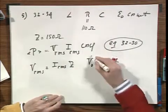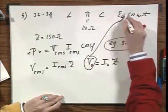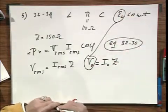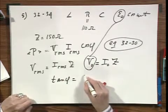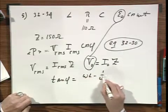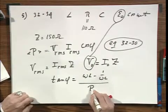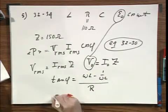This V zero, by the way, is that E zero. And the tangent of phi, which we have mentioned many times, is omega L minus one over omega C divided by R.